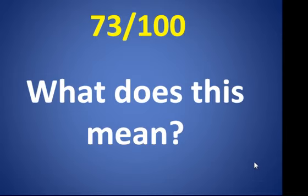A student doesn't know what this means. Maybe she says this puts me in the average range, but why was that? And also, why didn't the student get a chance to master what the learning outcomes are?